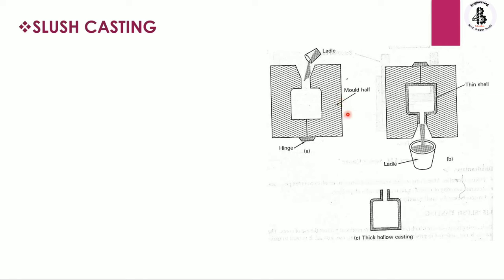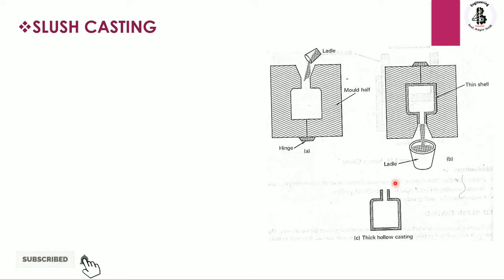So just you can see this is our mold half. These mold halves will be hinged, and with the application of the ladle it will be pouring the molten form of the metals. Just you can see that it will be inverted and you can collect the remaining molten form of the metals and make a thick hollow casting.